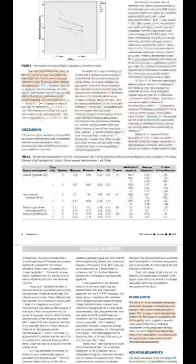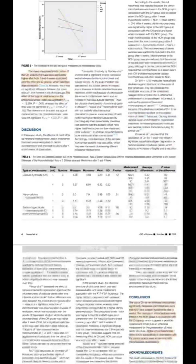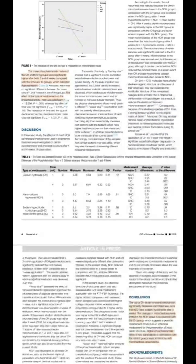For changes in the dentin chemical structure, referring to Table 2: both experimental groups showed higher and significantly greater chemical changes in dentin compared to the two control groups. When comparing the two experimental groups, there was no significant difference; however, to a lesser degree, there were some chemical changes in the nano calcium hydroxide group compared to the conventional calcium hydroxide group.